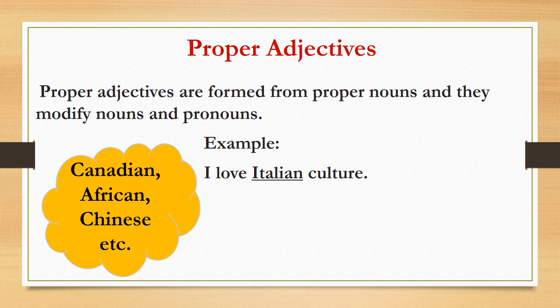Proper adjectives are formed from proper nouns and they modify nouns and pronouns. Example: I love Italian culture. The word Italian is a proper adjective and it is formed from the proper noun Italy. Always remember that proper adjectives typically look like their original proper nouns but have some sort of alternative ending. For example, America is a proper noun as it is the name of a country, and American is a proper adjective because it is formed from the proper noun America.